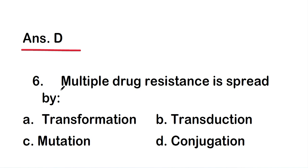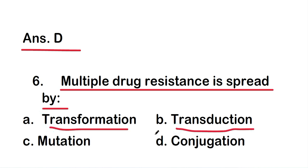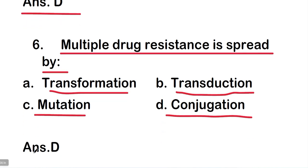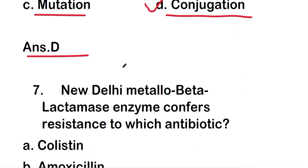Question six: multiple drug resistance is spread by transformation, transduction, mutation, or conjugation. The right answer is option D — conjugation. Multiple drug resistance is spread by conjugation.